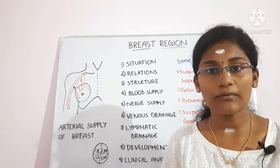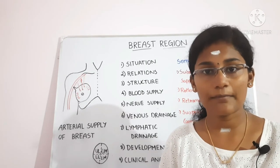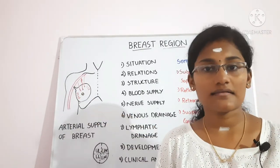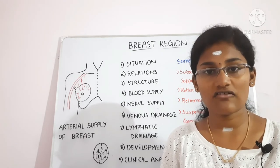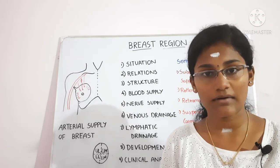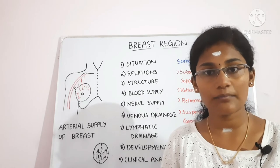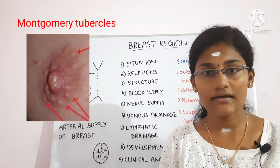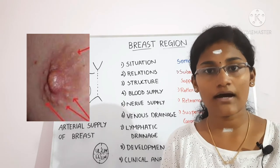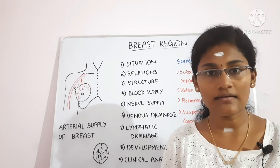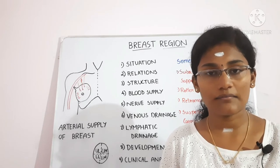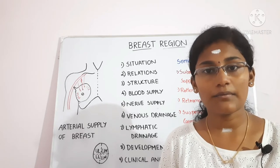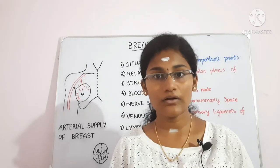The areola is the hyperpigmented region around the nipple, made up of modified sebaceous glands especially at the outer margin. During pregnancy and lactation, these enlarge to form the tubercles of Montgomery. The areola also has modified sweat glands and axillary mammary glands. Below the areola and nipple there is no fat, and they are devoid of hair.